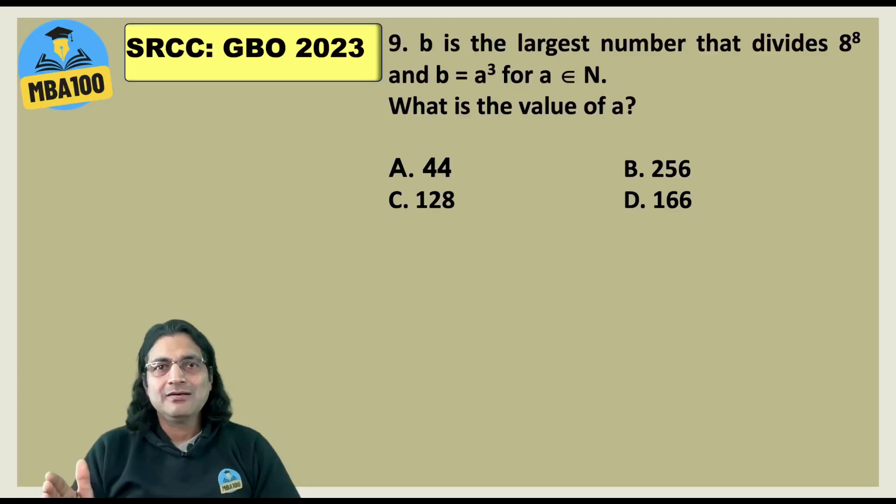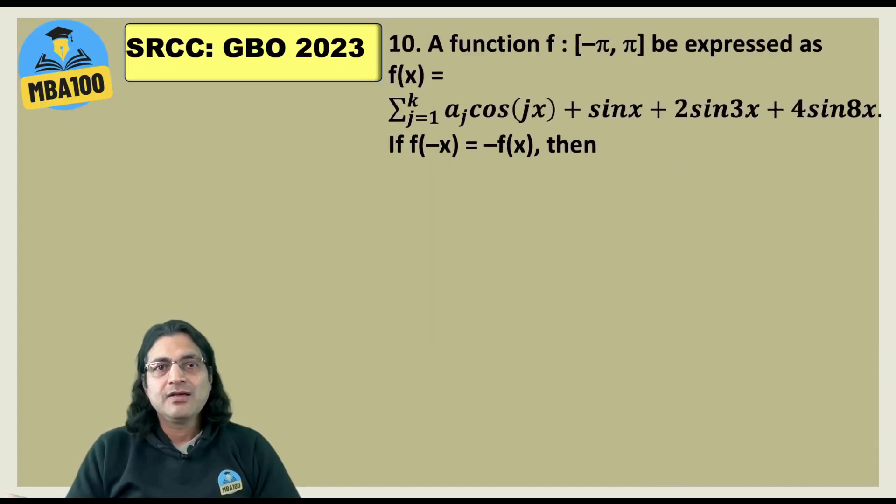Here B is the largest number that divides 8 to the power 8 and B is a perfect cube also. Now 8 to the power 8 is 2 to the power 24. So the biggest cube that can divide it is 2 to the power 8. That is nothing but 256.